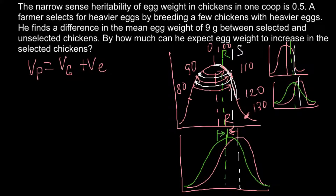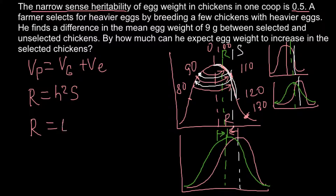To solve this problem, we use the formula: R (response to selection) equals h² (narrow sense heritability) multiplied by S (the selection differential, or mean of selection). Using real numbers: response to selection equals h² of 0.5, multiplied by the selection differential of 9 grams.